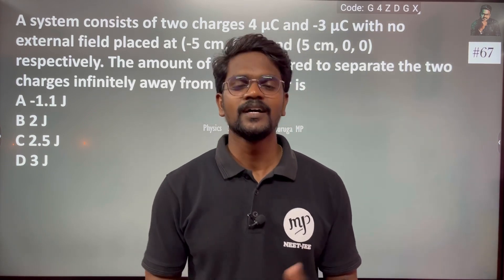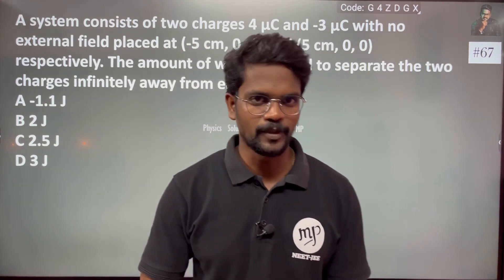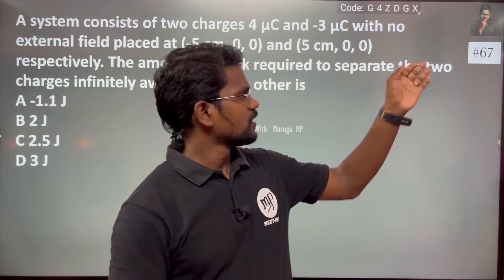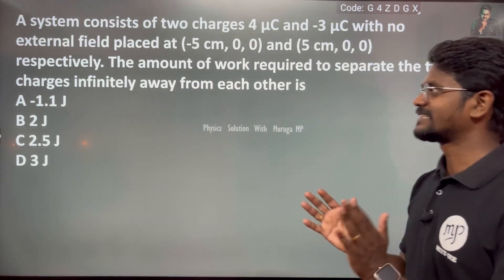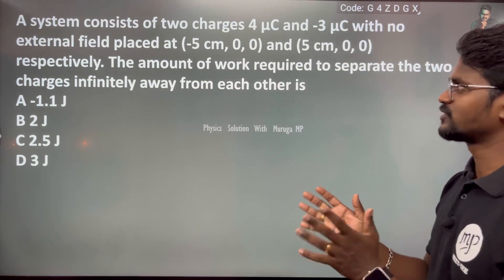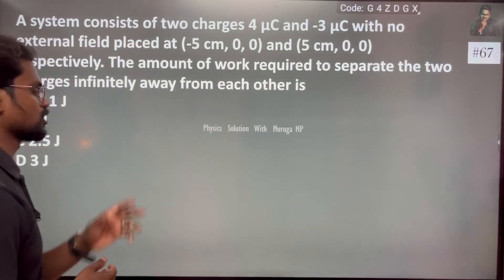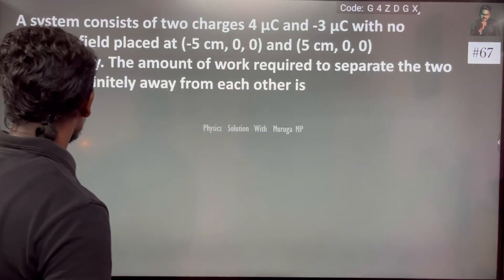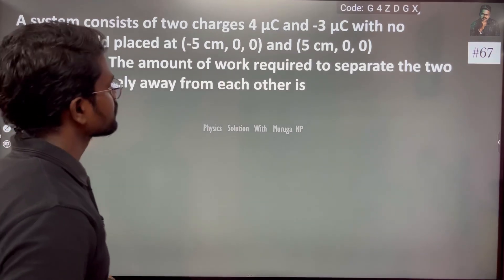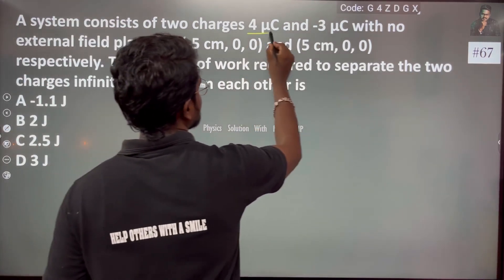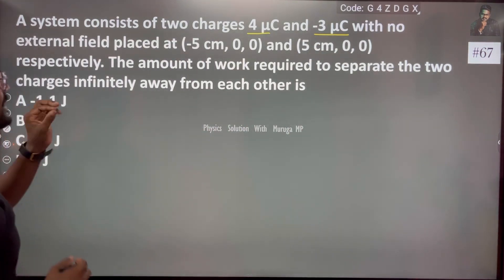Hi everyone. In a simple way, problem number 67: In a system consisting of two charges, one of them is four microcoulombs and one of them is minus three microcoulombs, with no external field.